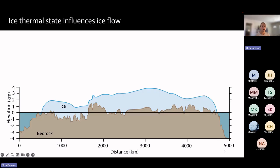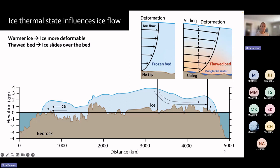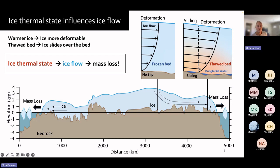I want to start with a simple mental model for how ice flows and how this is tied to the ice thermal state. There are really two components of ice flow: sliding and deformation. Sliding enables fast-flowing glaciers near the ice sheet margin. Both sliding and deformation are related to the ice thermal state because warmer ice is more deformable, and a thawed bed means water at the base can provide lubrication and facilitate faster sliding. The ice thermal state fundamentally controls how ice flows, and this matters because ice flowing and calving into the ocean is the predominant mechanism of mass loss from Antarctica, contributing to global sea level rise. It therefore seems really important to know the thermal state to make good predictions of mass loss.